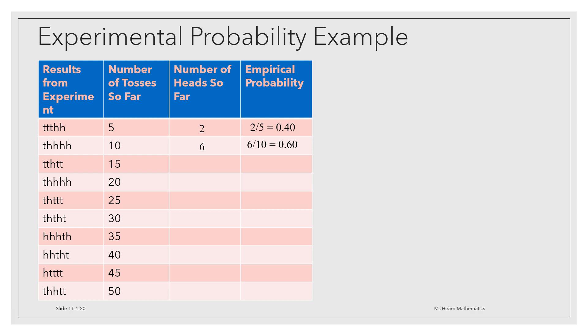In the third grouping of five, heads actually only appears once. It's tails, tails, heads, tails, tails. So out of the first 15, 7 were heads. 7 divided by 15 is about 0.47, rounding off to the nearest hundredth.